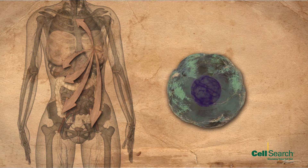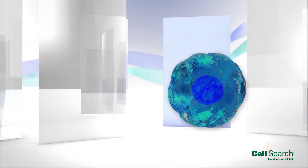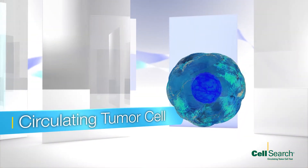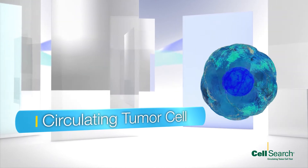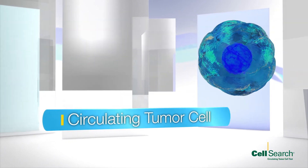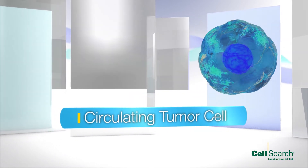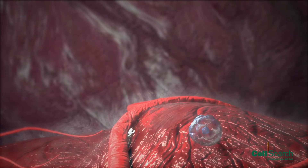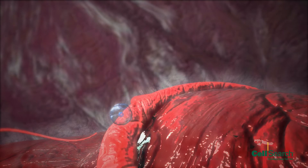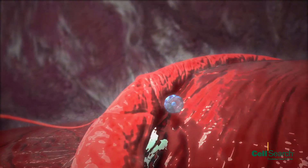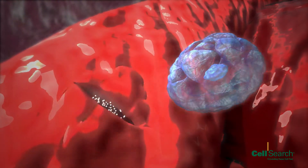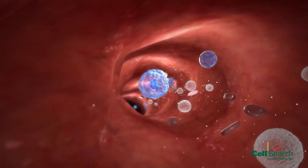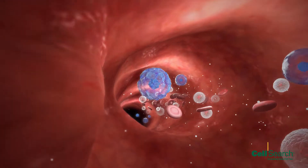This theory has since been validated, with the seeds today referred to as circulating tumour cells, or CTCs, the detection of which within the bloodstream can provide new and valuable information to doctors. When cancer spreads, tumour cells detach from the primary tumour and enter the bloodstream and travel to different parts of the body, a process known as metastasis.